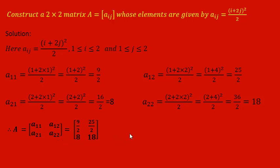Notice how we write the matrix: A11 then A12 in the first row because the first subscript indicates row number — so whenever we are in the first row the first number is going to be 1. Similarly in the second row the first number is 2. The column number j is the second subscript.